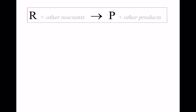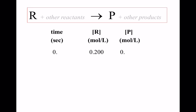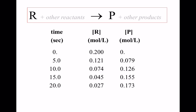Let's look at some data. At time zero, you have 0.200 molar reactant and no product. We let it go for five seconds, and of course your reactant has gone down and your product has gone up. Then ten seconds, fifteen seconds, twenty seconds. We're going to do some rate calculations with this data.